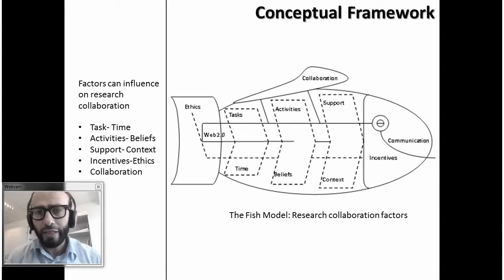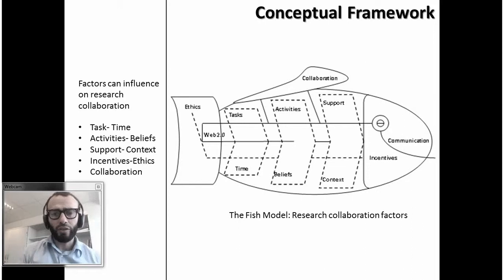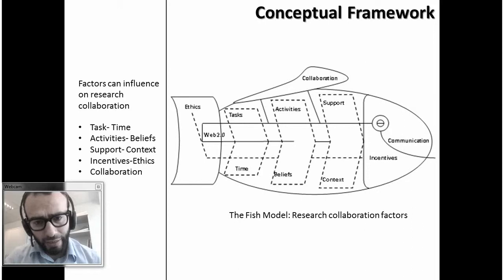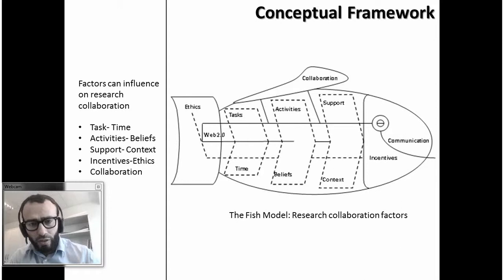This is our conceptual framework. The idea came from the concept that in the universe there exists a concept and its opposite — day and night, good and bad, some kind of duality in the universe in general. We took this idea to form our model, making relations between two different concepts, and explored whether both together are able to lead to collaboration. For example: tasks and time, academic tasks and favorite times, research activities and beliefs, research support, and the context of research incentives connected to ethics — whether both can lead to collaboration or not.